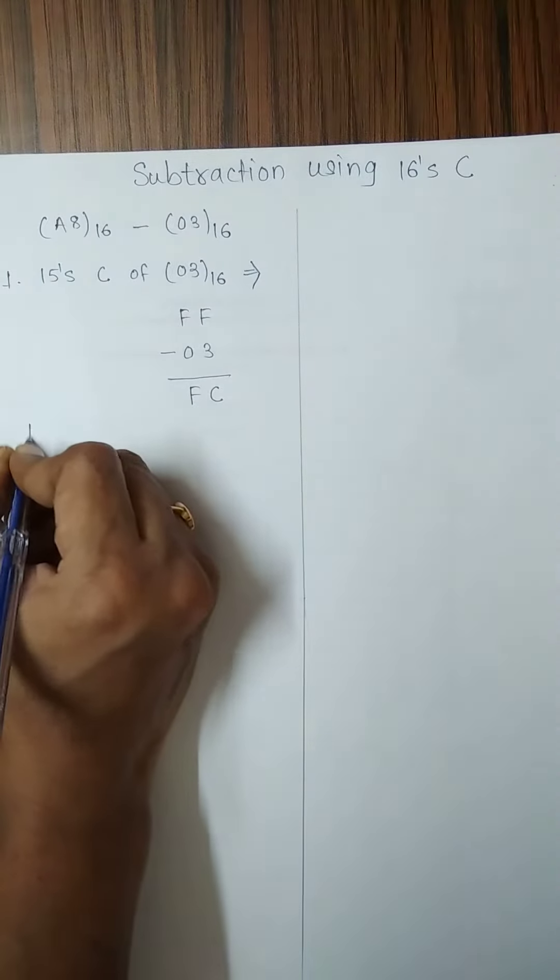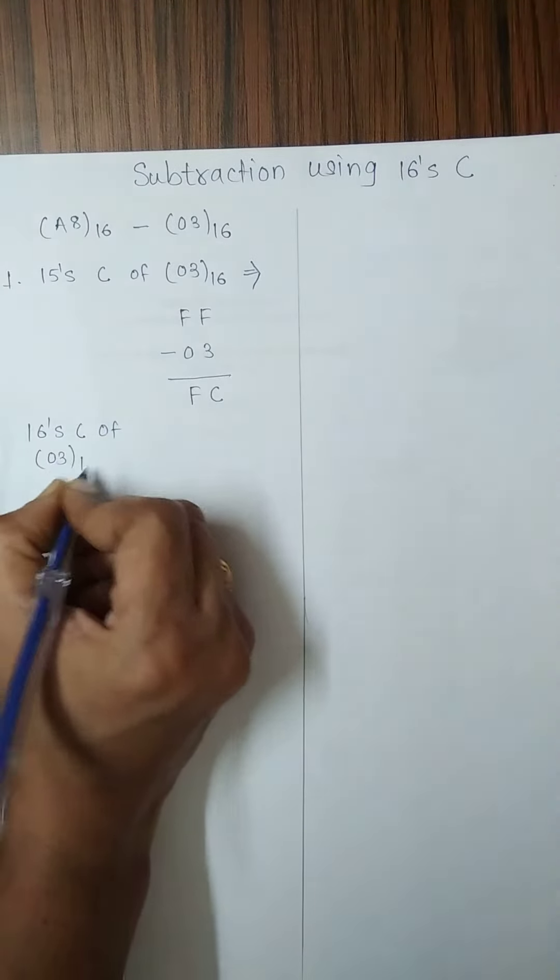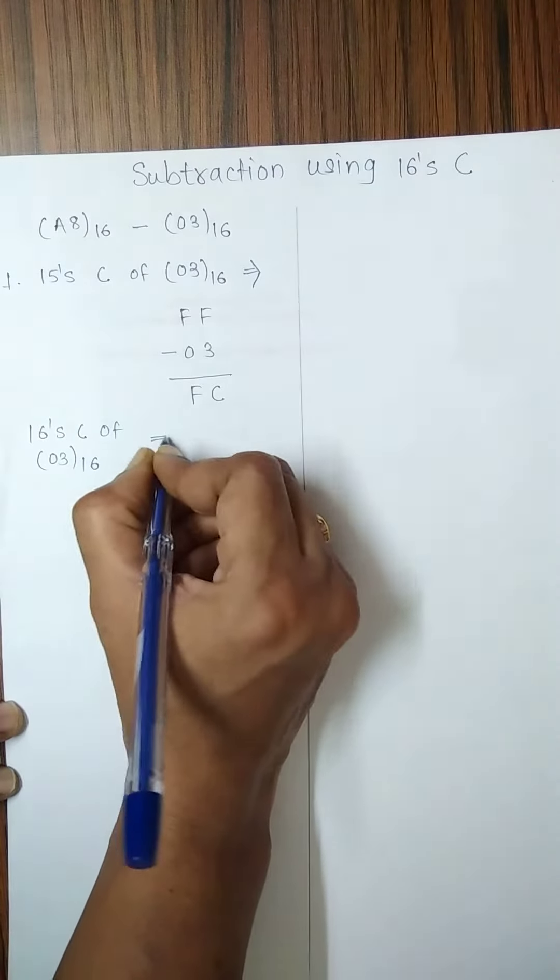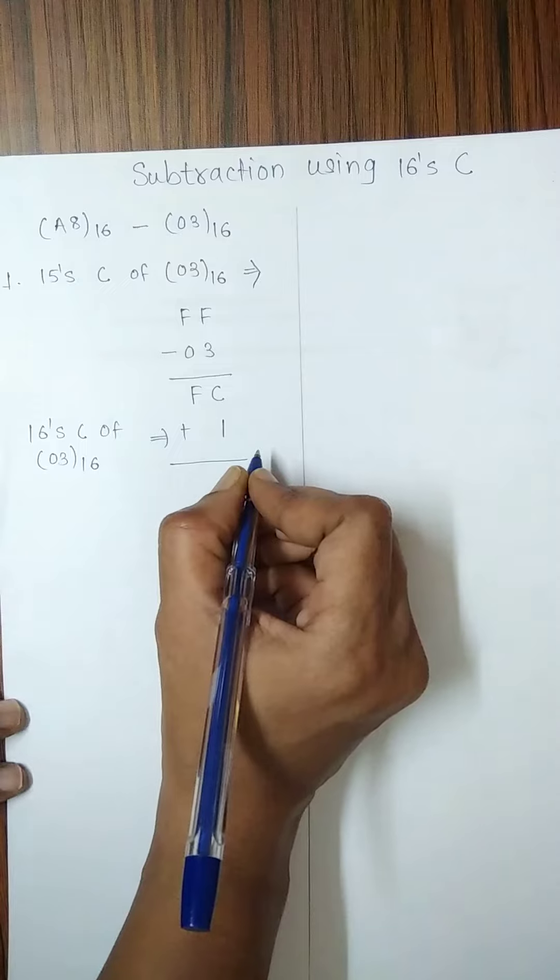To get the 16's complement of 03 base 16, we will add 1 to this 15's complement. This addition we have to perform in hexadecimal.